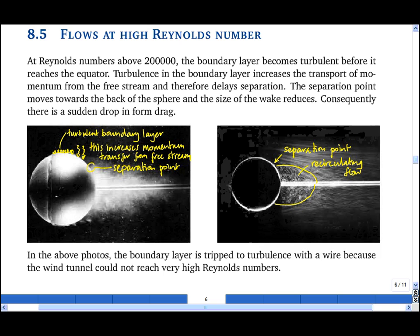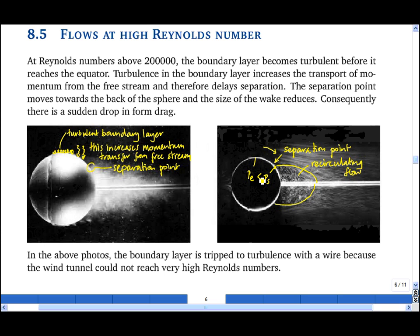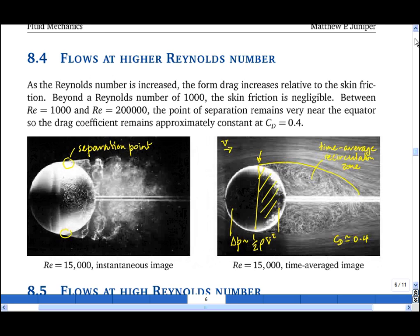And this is beneficial in two ways. Firstly, there is some pressure recovery in this region here, by which I mean that the pressure at the separation point is greater than the pressure at the equator. So the pressure along the back face of the sphere is larger than it was when the separation point was at the equator. And secondly, this lower pressure acts over a smaller region of the sphere. So not only is the pressure drop between the front and back of the sphere not as big, but it also acts over a smaller area. And these two effects combine to greatly reduce the form drag.